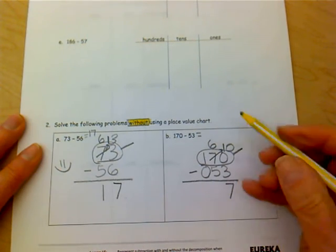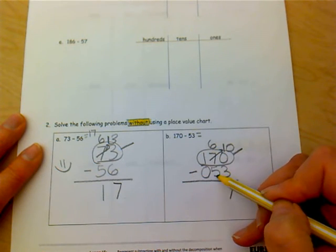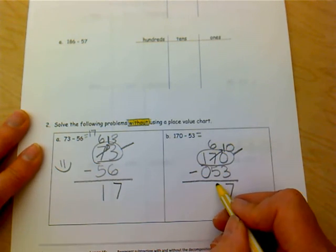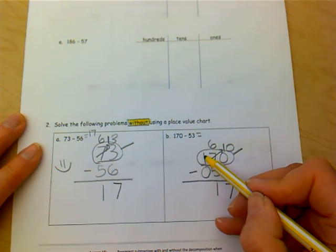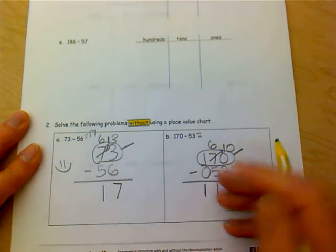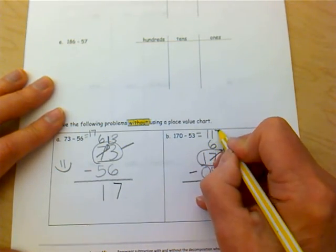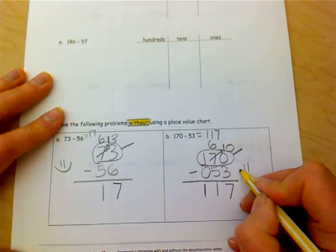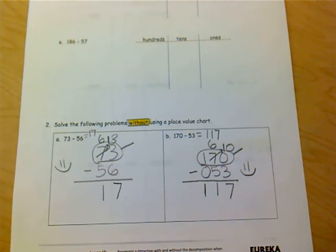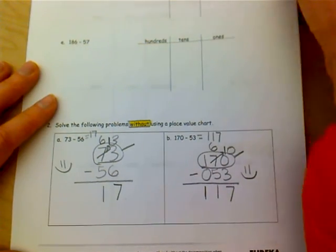Six tens take away five tens or five from six would be one. And one one hundred take away zero one hundreds leaves me with a hundred. And your difference should be a hundred seventeen. Congratulations to you if you got both of those correct. I would be very proud and I'd love to sing the I'm proud of you song, but here we go.